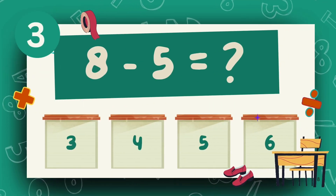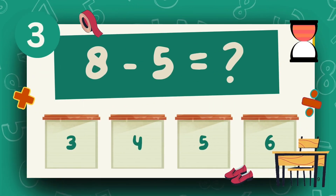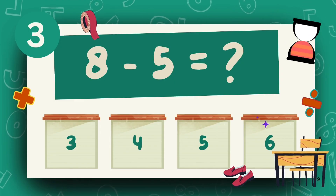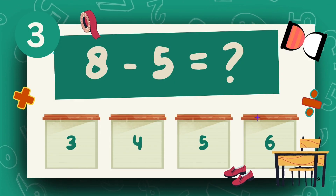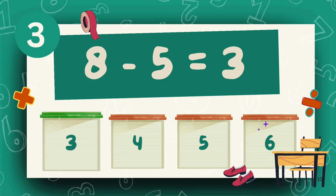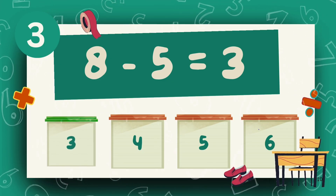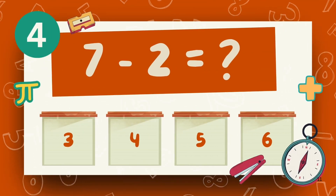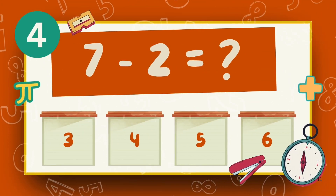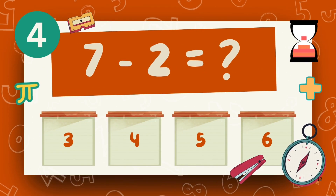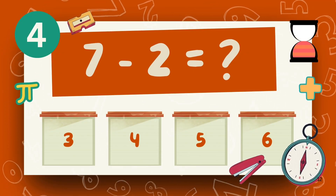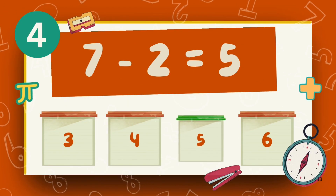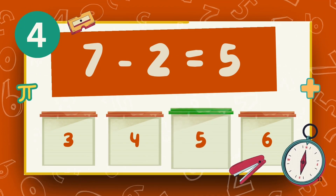What is 8 minus 5? The answer is 3. What is 7 minus 2? The answer is 5.